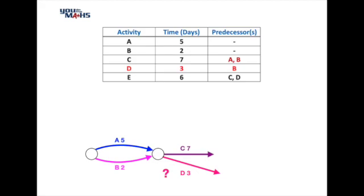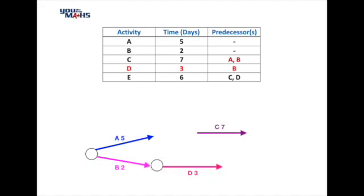One option is to draw activity D coming off activity B by itself — in other words, with no link to A — but that creates a problem when we want to draw activity C. So we appear to have a conflict in our diagram and we need to get around that.